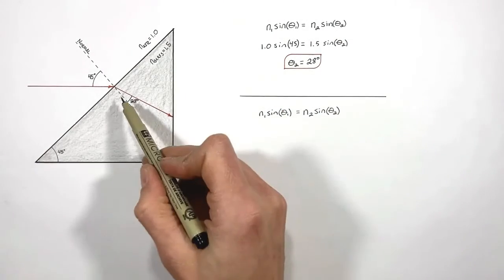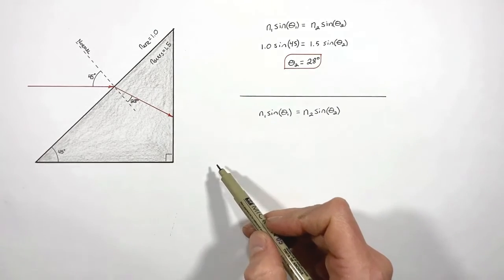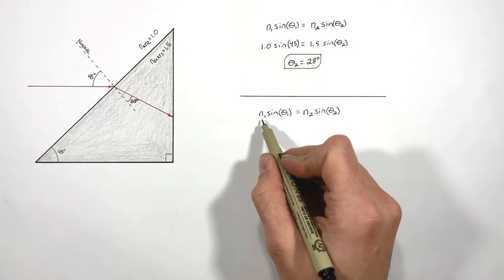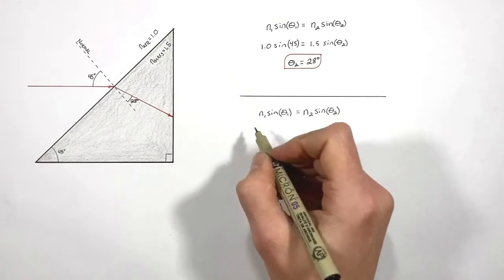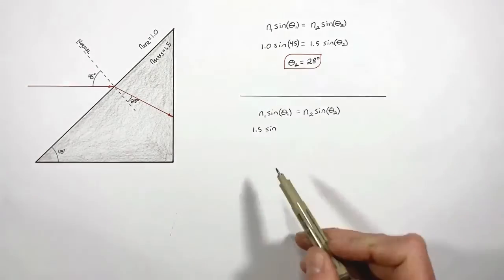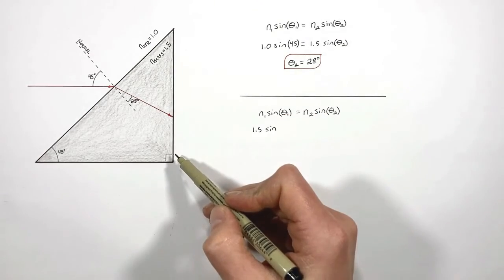Now this time, the ray in the glass is the incident ray, and the refracted ray will be traveling into air. So here, for our index of refraction, we're first going to be dealing with the index of refraction for glass, and the angle of incidence which the ray makes against this edge of the prism.